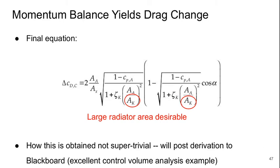So when you put it all together, you can get an expression for the delta drag coefficient using the integral momentum theorem. And we can get the drag change. So we can get a final equation for the delta CD. And the things that we can see from this are that a large radiator area, AK, is desirable. And that obviously if we lower the loss coefficient, that's good too.